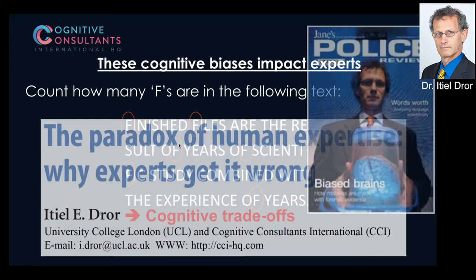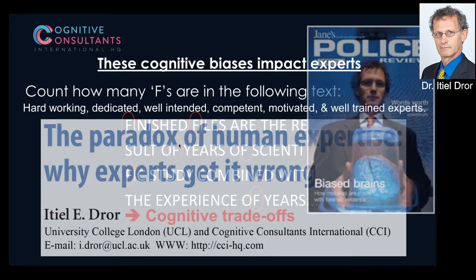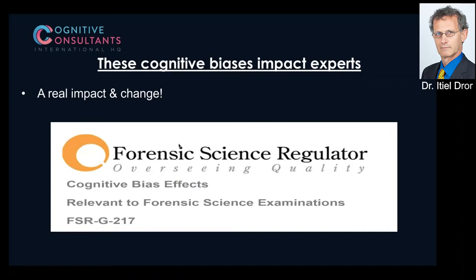This is the cognitive trade-off — the paradox of human expertise. Being an expert makes you susceptible to missing certain information. In England, we gave students a pound for every F they found — extremely motivated, and they still rarely counted six. It's not a motivational problem. Ten years ago there was a lot of resistance and personal attacks on this research. But things have changed: in the UK, the forensic science regulator has now published guidance saying cognitive bias impacts every aspect of forensic work.